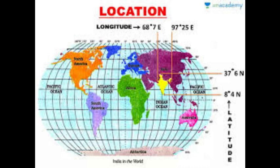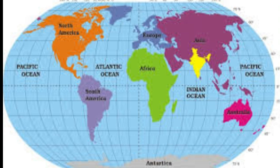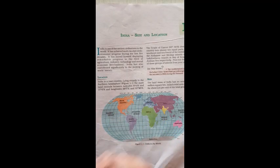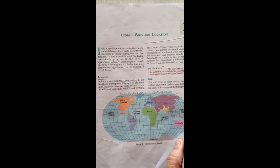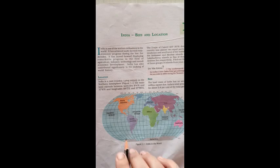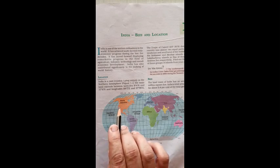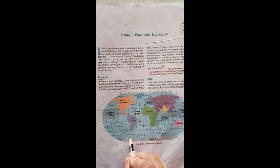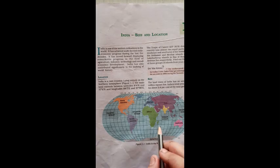India is a vast country lying entirely in the Northern Hemisphere. The Earth is divided into two parts: the Northern Hemisphere and the Southern Hemisphere. This dotted line you see is the equator, which divides the Earth into two halves. The part above the equator is the Northern Hemisphere, and the part to the south is the Southern Hemisphere.